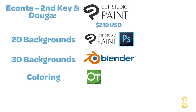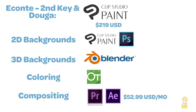OpenToonz has a bit of a learning curve, but the tools are built specifically for coloring anime image data. For compositing, unfortunately you'll have to subscribe to Creative Cloud, which is $52.99 a month for all apps, so that you'll have access to Adobe After Effects and Adobe Premiere. Since this comes with Photoshop, if you prefer drawing in that program it can be used for background painting as well. If you learn all these programs, you can start making high-quality animated productions as a one-man team for roughly $270, assuming you already have a drawing tablet.